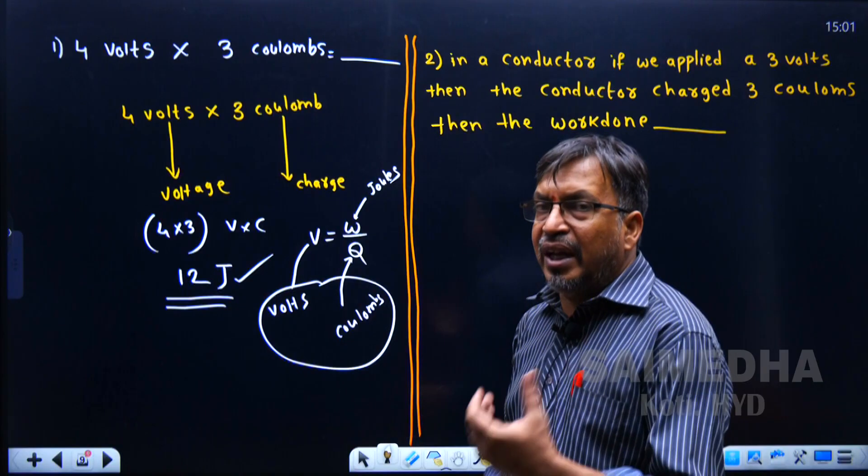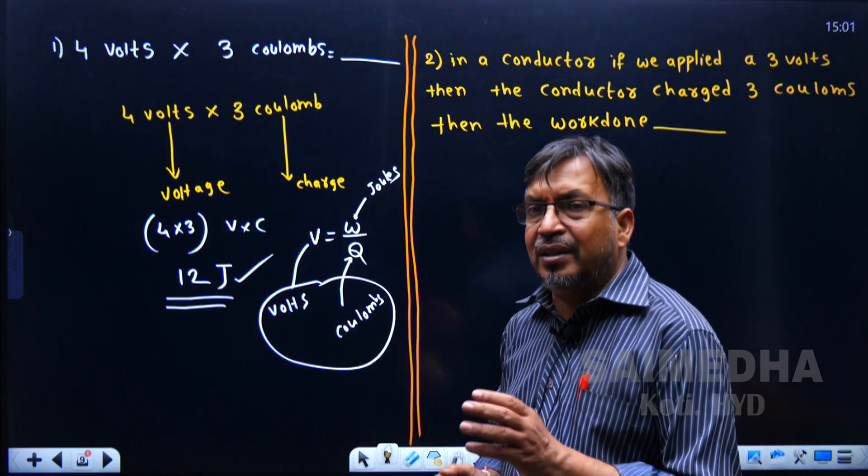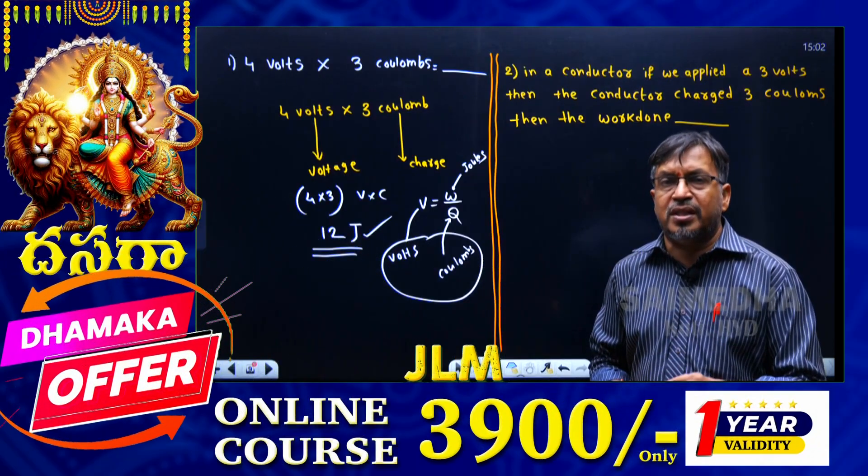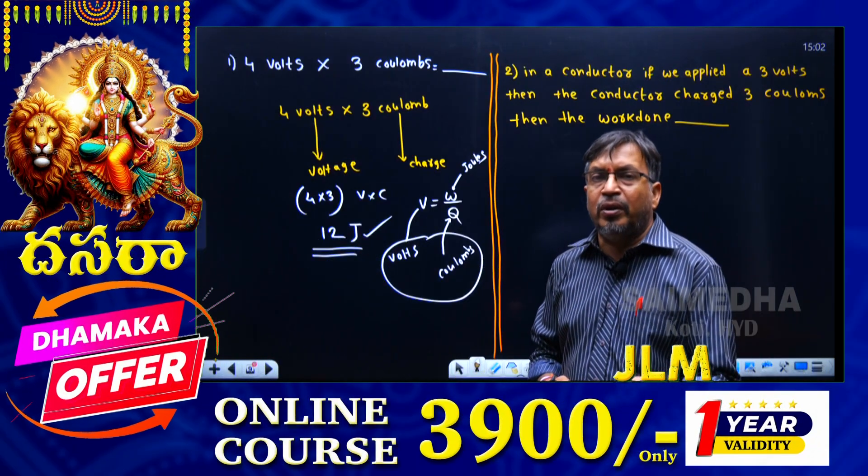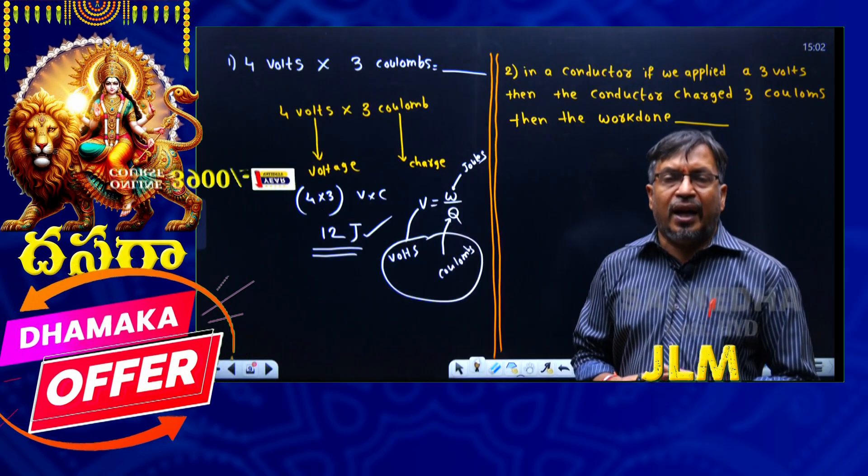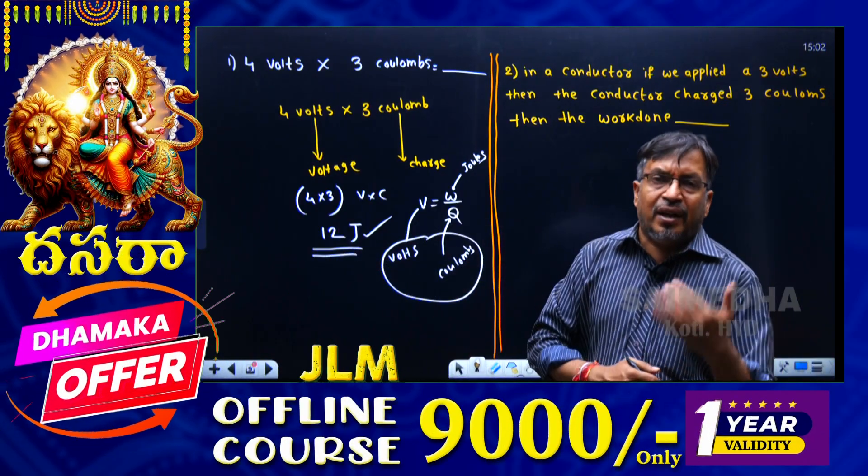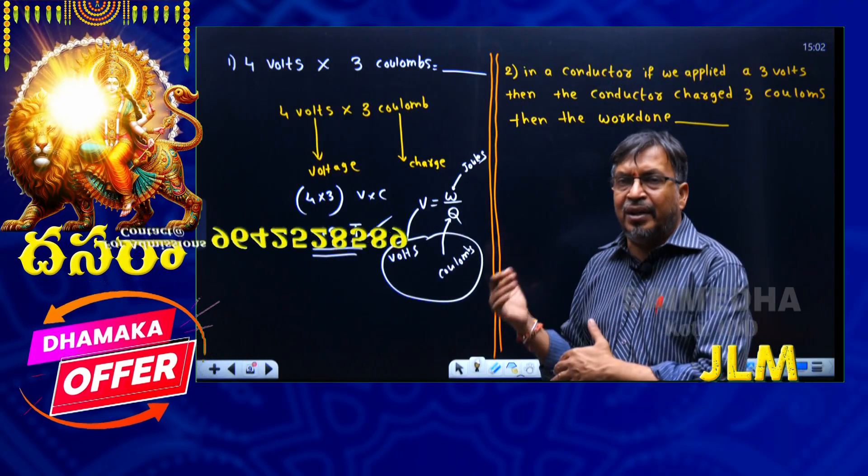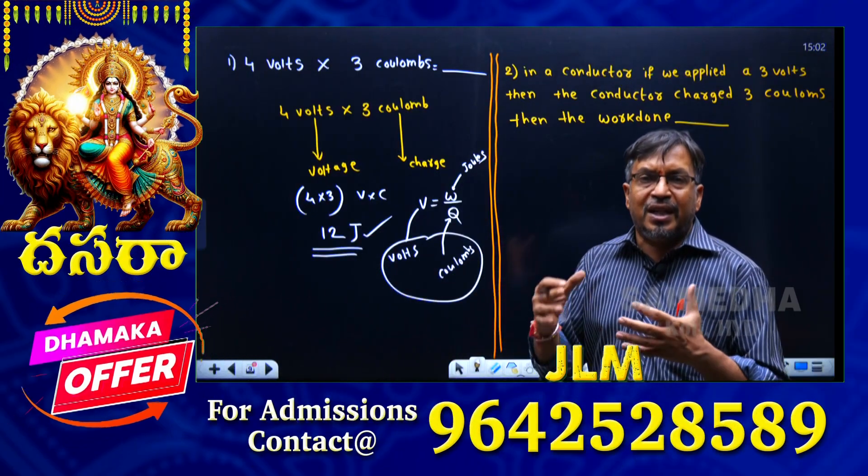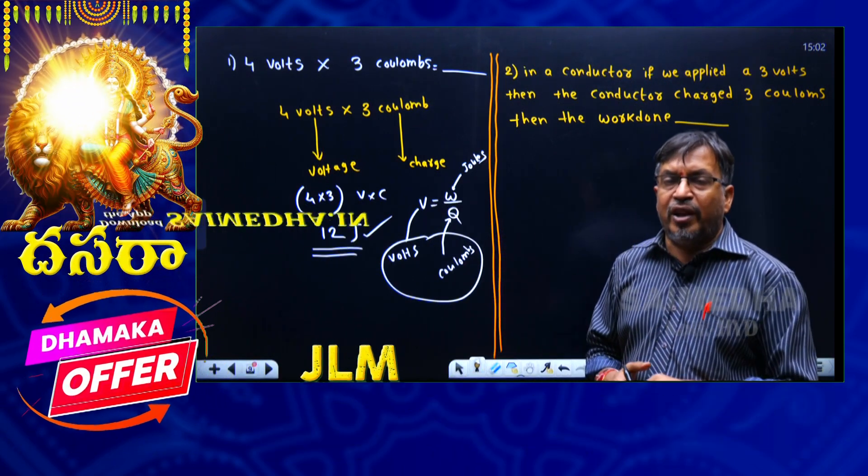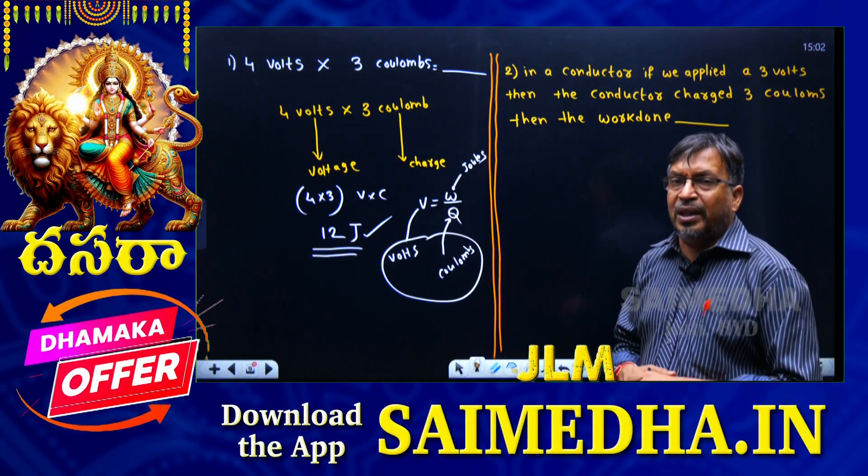From V equals W by Q, what is V? Voltage, units volts. W work done, units joules. Q charge, units coulombs. From this one formula V equals W by Q, we can solve different types of problems.